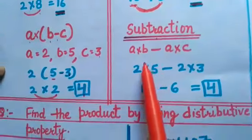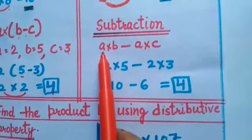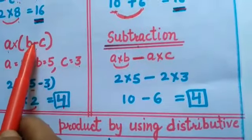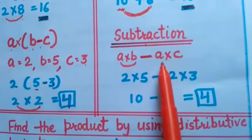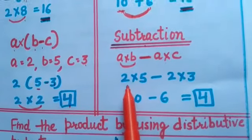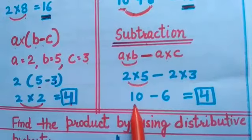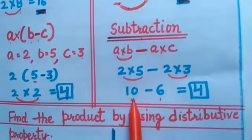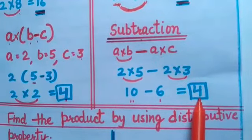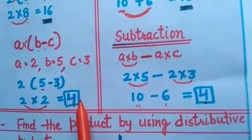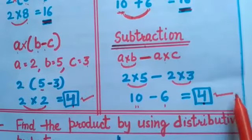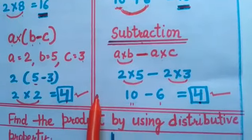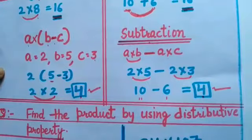By distributing, A into B minus A into C: 2 into 5 gives 10, and 2 into 3 gives 6. Subtracting, we get 10 minus 6 equals 4. Both sides give 4, so distributive property applies over subtraction as well.